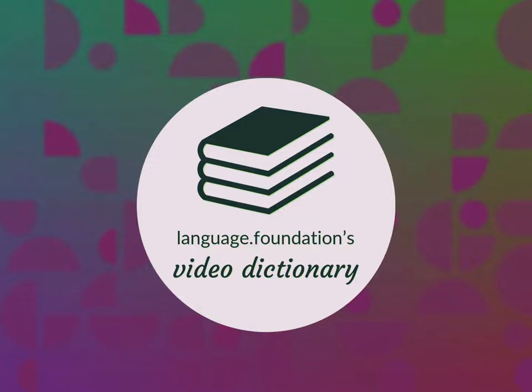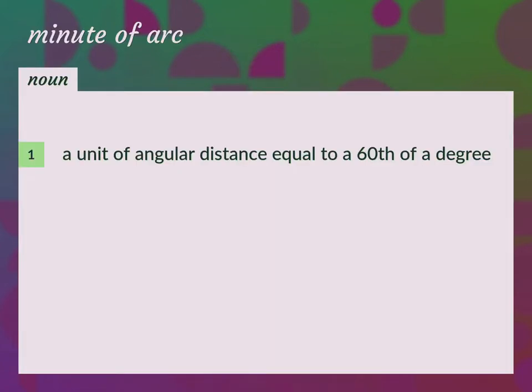Language.Foundation's Video Dictionary, helping you achieve understanding. Arc Minute: a unit of angular distance equal to a 60th of a degree.